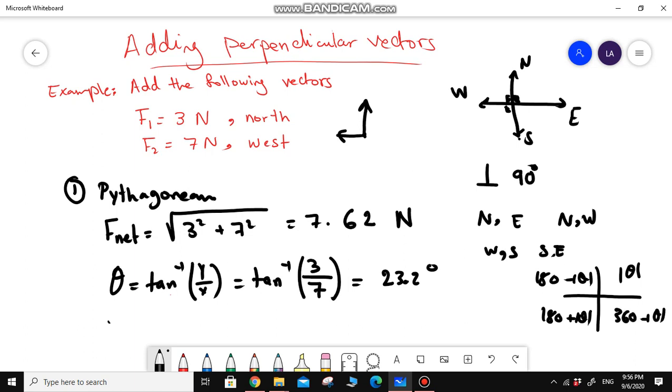Here, we are between the north and the west. So we are somewhere here. The vector F net is pointing here.